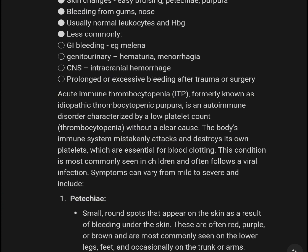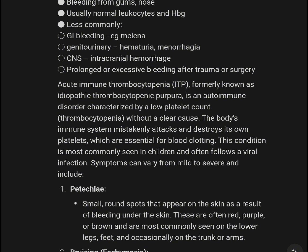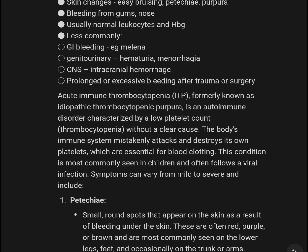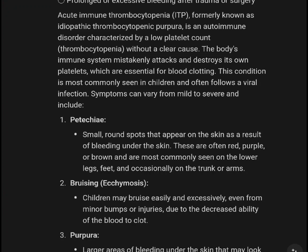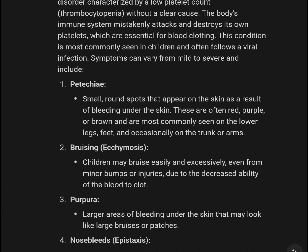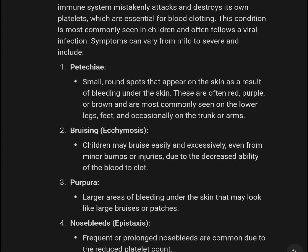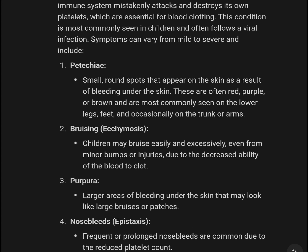ITP, also known as idiopathic thrombocytopenic purpura, is a condition in which the immune system destroys its own platelets, which are essential for blood clotting. The condition is more commonly seen in children and often follows a viral infection.